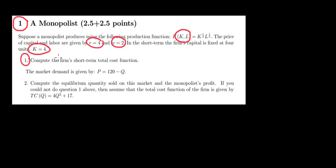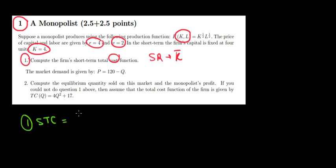Now let's look at what the short-run total cost function is going to be. In the short run, capital is fixed, so we will have a fixed amount. Short-run total cost will have a fixed cost — by definition it's fixed in the short run — plus a variable cost, which is going to be the cost of labor: the wage times the labor.